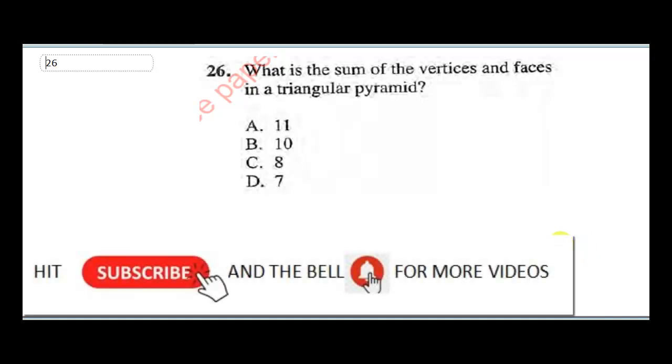Question 26 says what is the sum of vertices and faces in a triangular pyramid. If you know your triangular pyramid, this is what it looks like. So you have this side, then you have here. Now where are the vertices? The vertices are this point, this is one, that is two, that is three.